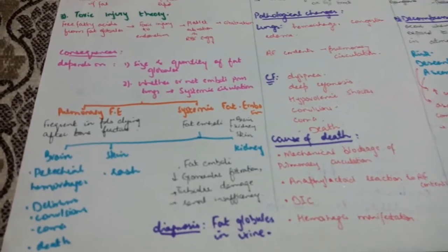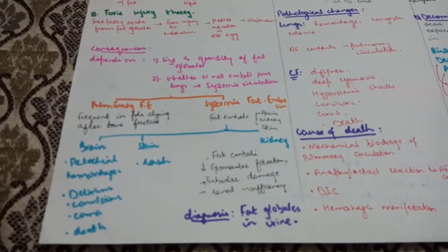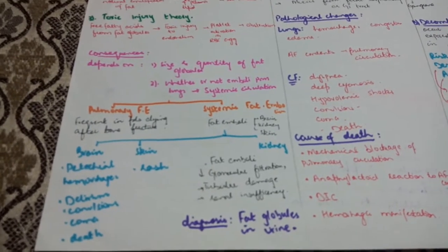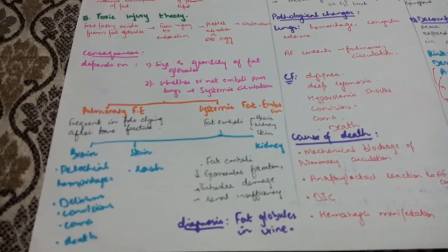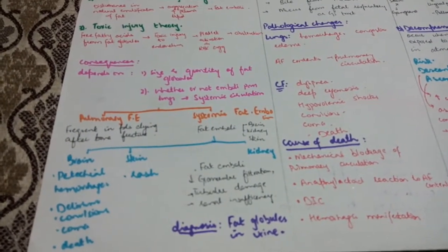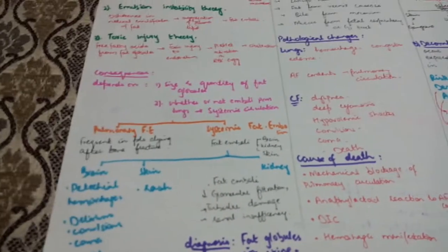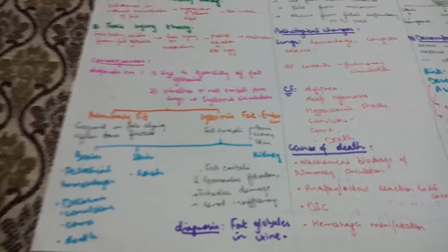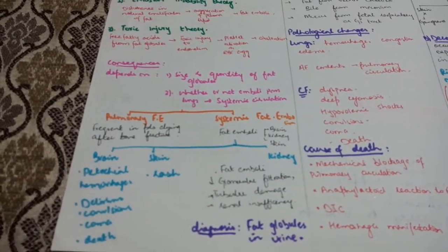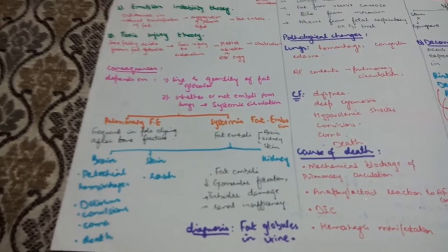Consequences depend on size and quantity of fat globules, and whether emboli pass to lungs via systemic circulation. There are two types: pulmonary fat embolism which is frequent in patients dying after bone fracture, and systemic fat emboli affecting brain, kidney and skin. Brain involvement causes hemorrhage, confusion, convulsion, coma, and death. Skin involvement causes rash. Kidney involvement decreases glomerular filtration, causing tubular damage and renal insufficiency. In the conjunctiva you can observe and diagnose it. You can demonstrate fat globules in urine or sputum or in lung or brain.